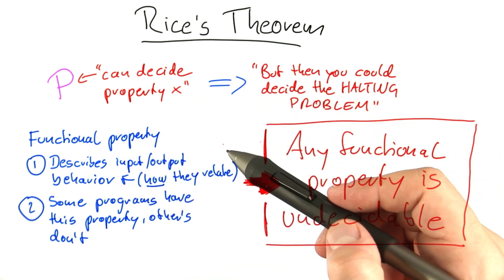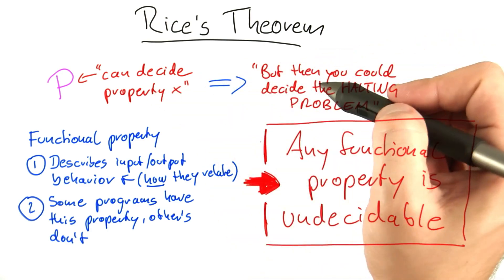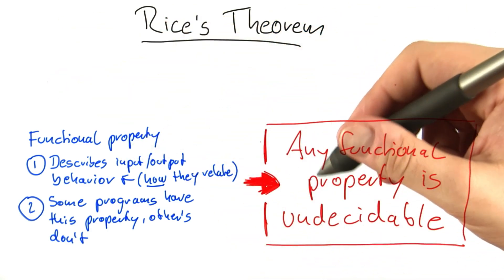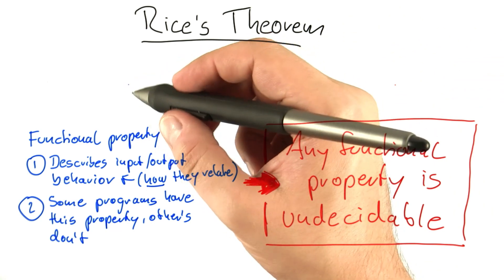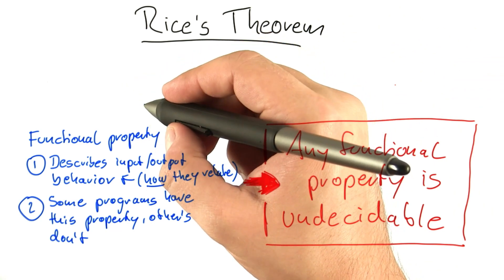And the proof of that is actually quite easy, and it follows the same scheme as above here. So the proof of this general statement follows the same scheme that all of our other proofs of undecidability have basically used.